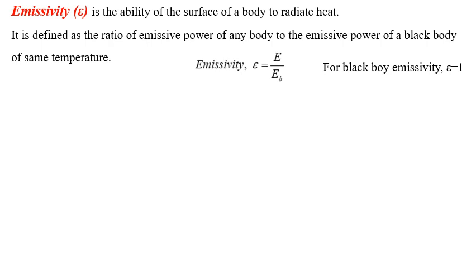The emissivity of real surfaces is not constant — it varies with the temperature of the surface as well as wavelength and direction of emission. Therefore, different emissivities may be defined for a surface depending on the effect considered, such as hemispherical and total emissivity, spectral emissivity, or directional emissivity.